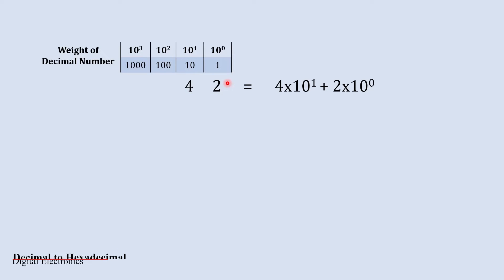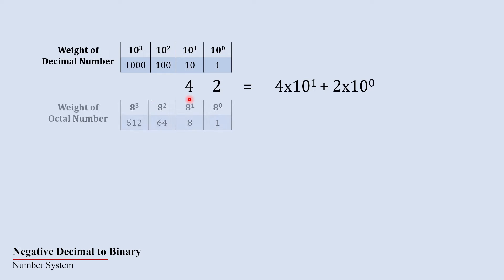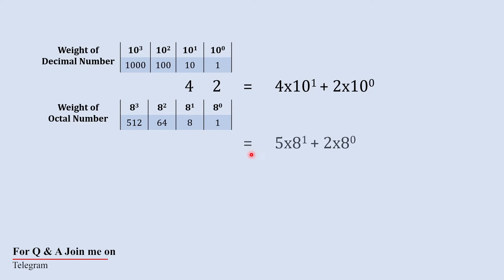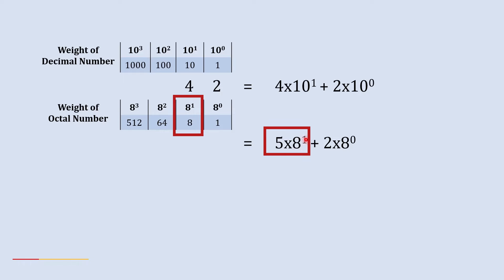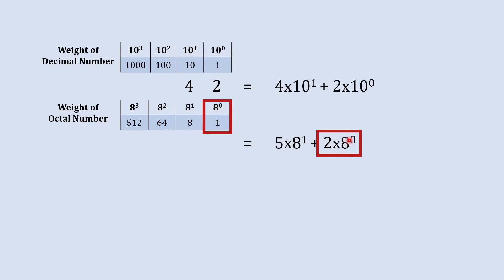This is how a decimal number forms. Now we are supposed to write the octal equivalent to this decimal 42. For that, we will use the weightage of the octal number. Using this weightage, we write it as 5 into 8 raise to 1 plus 2 into 8 raise to 0.